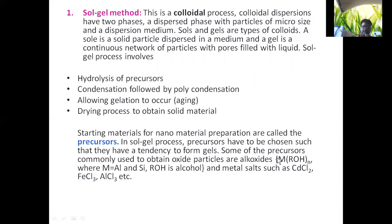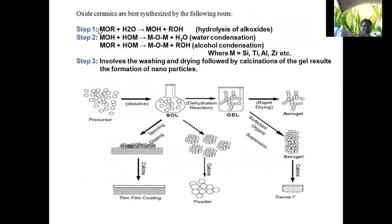Commonly used precursor materials include oxide particles like alkoxides. The general formula for alkoxides is M(ROH)n, where M is aluminum or silicon, and ROH is alcohol. Metal salts such as cadmium chloride, ferric chloride, and aluminum chloride are also synthesized by this method. For oxide ceramics, step one is hydrolysis of the precursor — hydrolysis is the addition of water. The alkoxide M(OR) reacts with water to form M-OH plus R-OH.